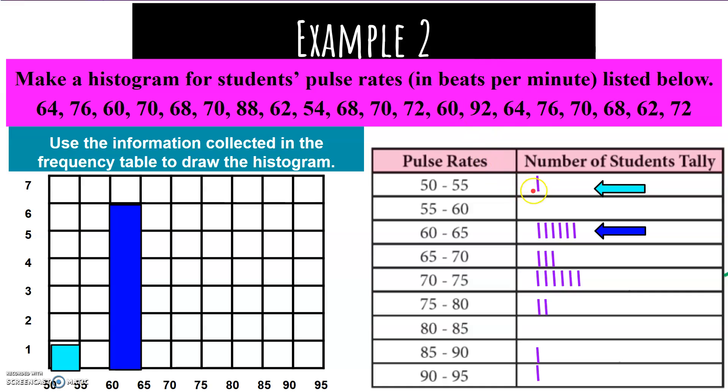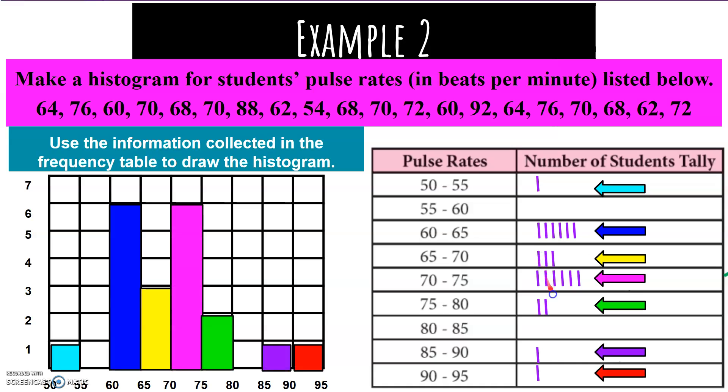Then we start filling it in. There's 1 in the first one, 6 in the second one, 3 in the next one, and so on. And this is what our histogram looks like. See what I mean about it looking a bit like this, only sideways?